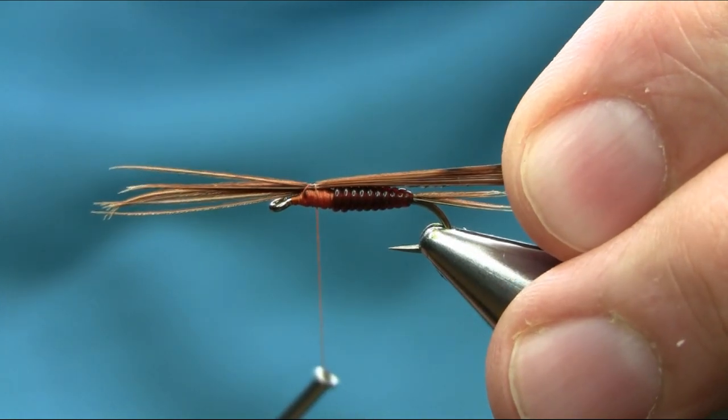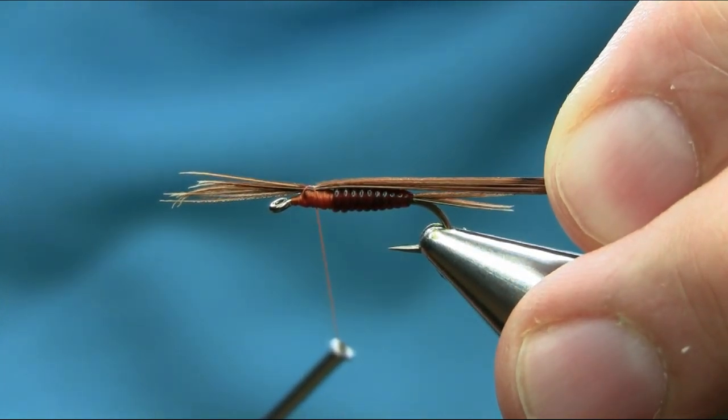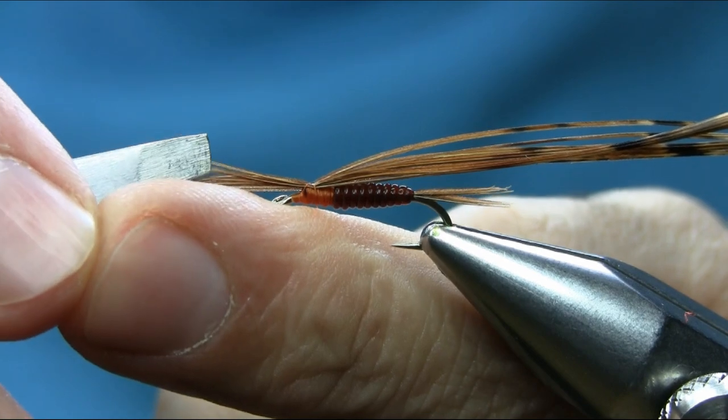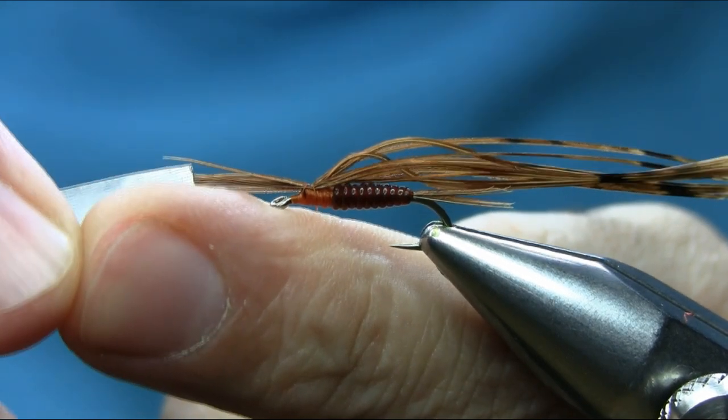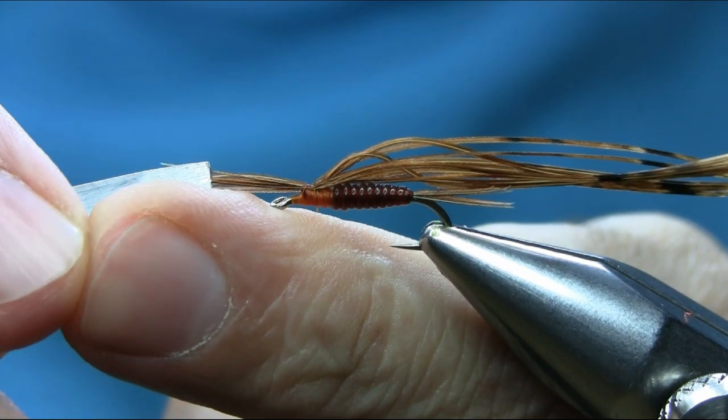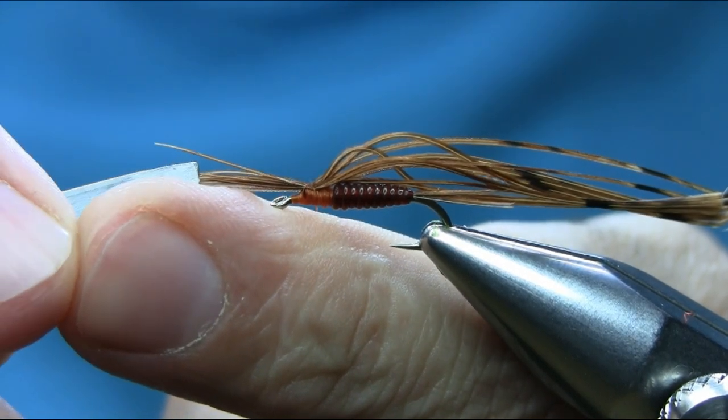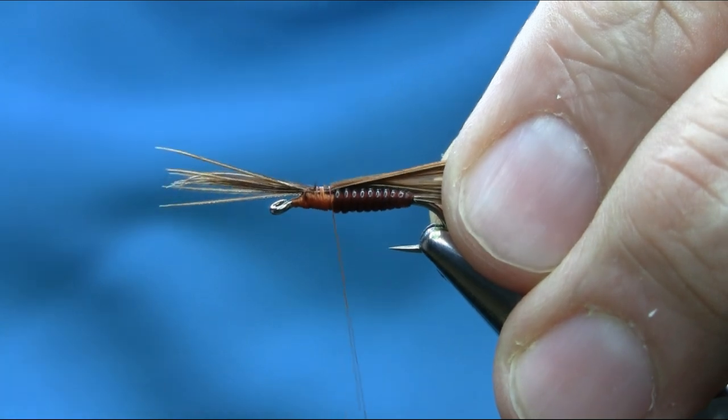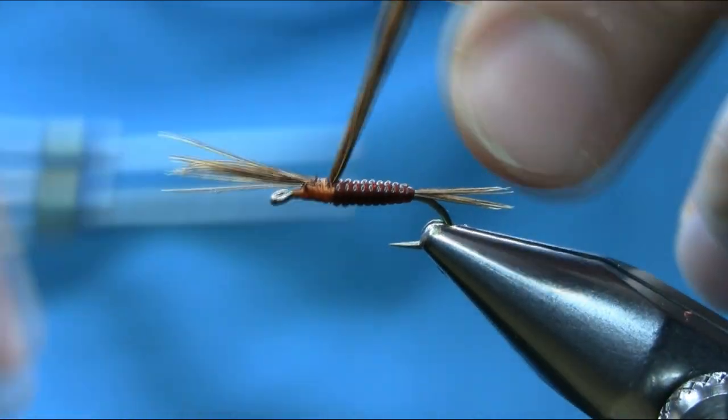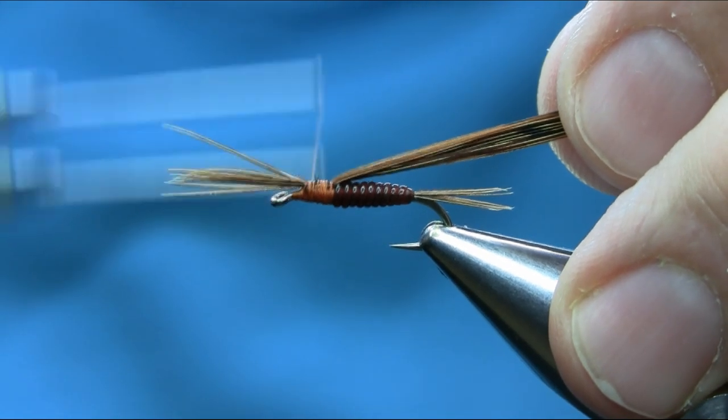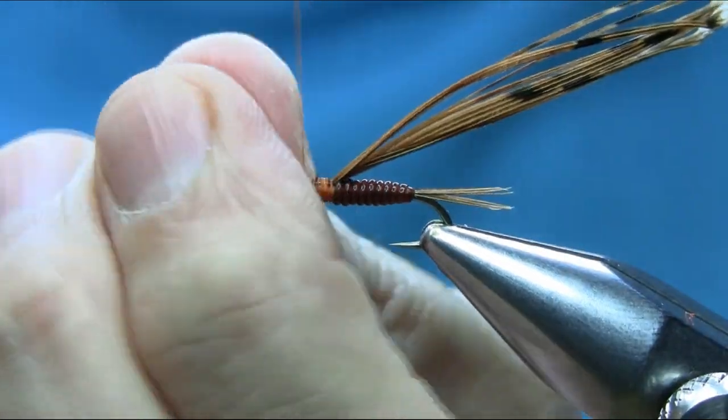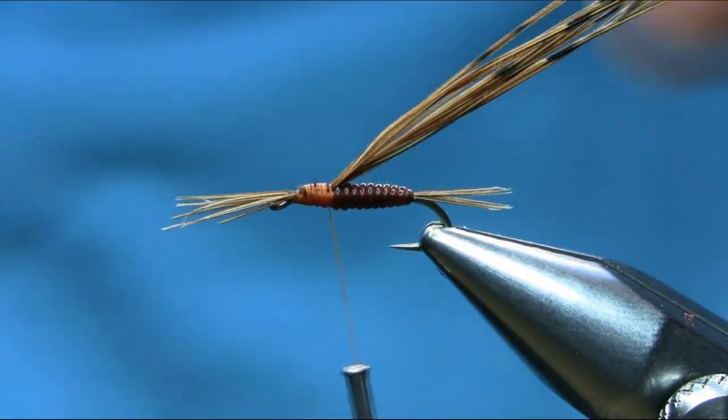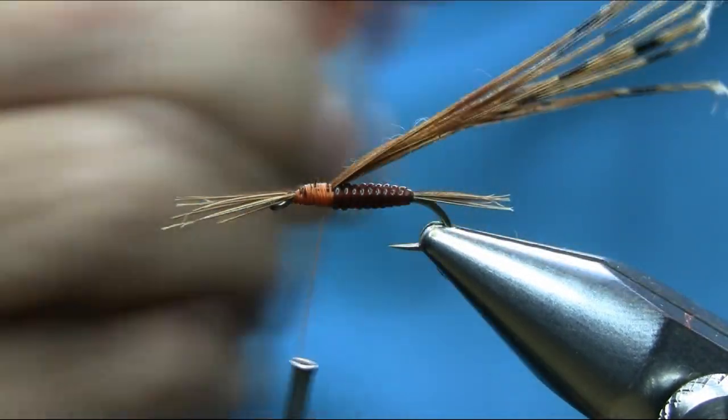All this so we have nice side legs. Sometimes they're not equal so you can use tweezers to pull some of them fiber out just to have the same size of legs. Make sure they're sitting on top. I'm just gonna use the brush to release them.